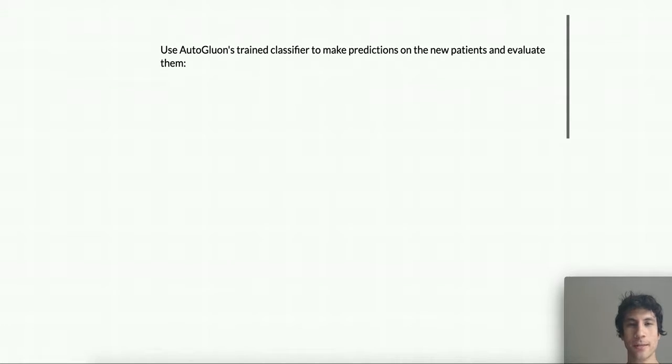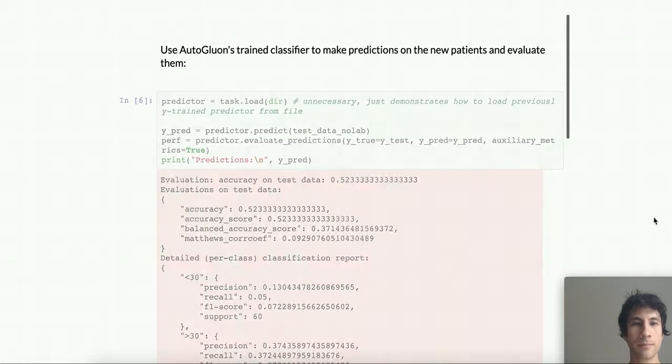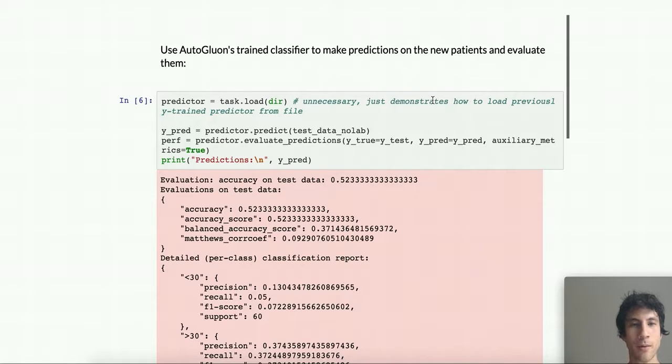Now let's use AutoGluon's trained classifier to make predictions on the new patients and evaluate how well it was actually able to predict whether or not each patient needed to be readmitted to the hospital after their stay. Here we first reload the predictor object from the output directory that was previously specified during task.fit. This is actually unnecessary here because we're still in the same Python session, but it just shows you how you would do this if you wanted to produce predictions in a new Python session. Maybe you're deploying your models on some separate server. Next, we call predictor.predict on the unlabeled test data dataframe to actually obtain predictions that we store in y_pred. And finally, we evaluate these predictions against the ground truth target values stored in y_test. And here we specify that some auxiliary metrics should be computed as well. And so the evaluation looks like this.